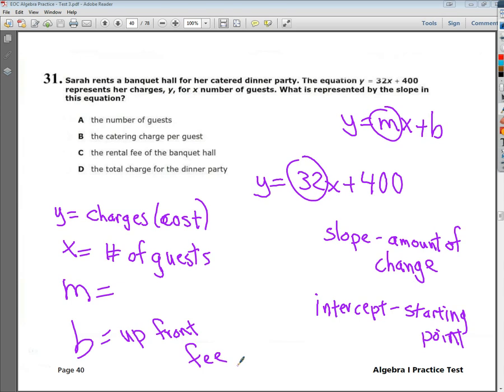The other side of it is, we have to have some idea of how much we pay more each time we have a guest. So, the slope represents the amount of change per input value that we add to it. So, for every one guest, how much is our cost going to go up? So, basically, it's $32 a plate at this dinner.